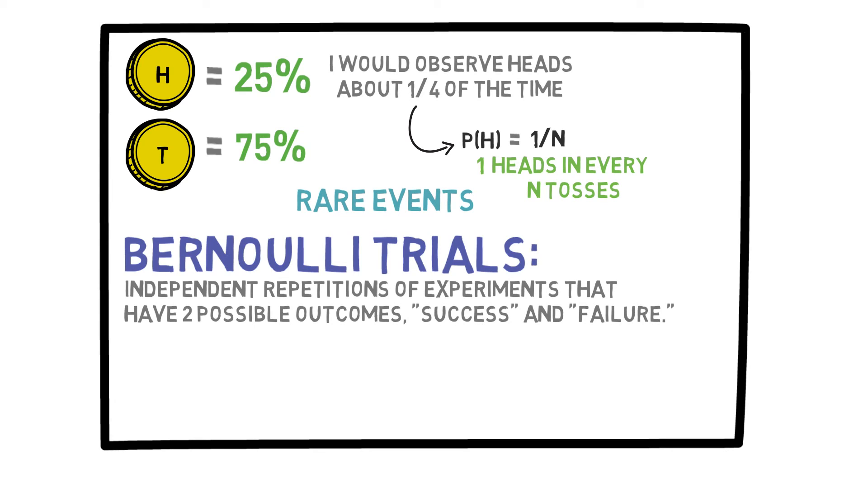Success and failure, or in this case, heads and tails. Even if the probability of success is 1 over 1,000, if I repeat the experiment a large number of times, I will get a success eventually. This means that rare events happen given enough opportunity. If you repeat an experiment enough times, then you will eventually achieve the outcome you were hoping for.